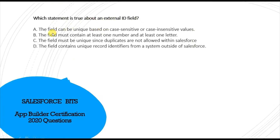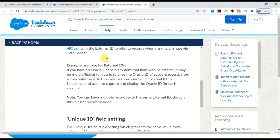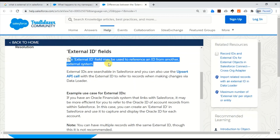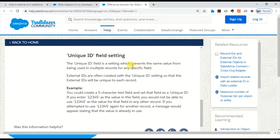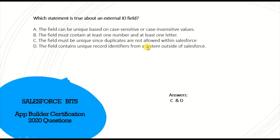Next question: what is true about external ID fields? Option A — the field can be unique based on case-sensitive or case-insensitive values — not necessarily true. Option B — the field must contain at least one number and at least one letter — not true. Option C — the field must be unique since duplicates are not allowed within Salesforce — that is true. Option D — the field contains a unique record identifier from outside Salesforce — also true, as the name itself suggests. The external ID field may reference an ID from another system and must be unique to be loaded into Salesforce.